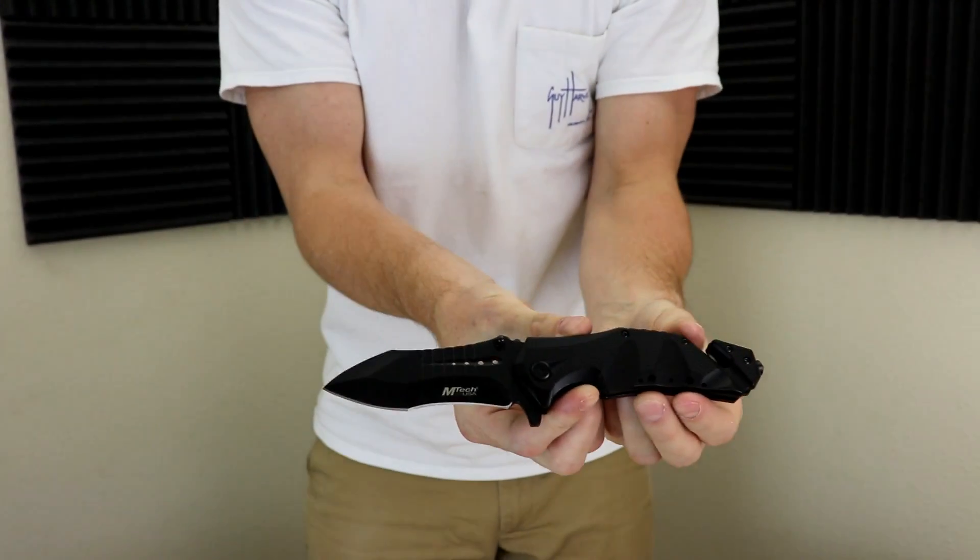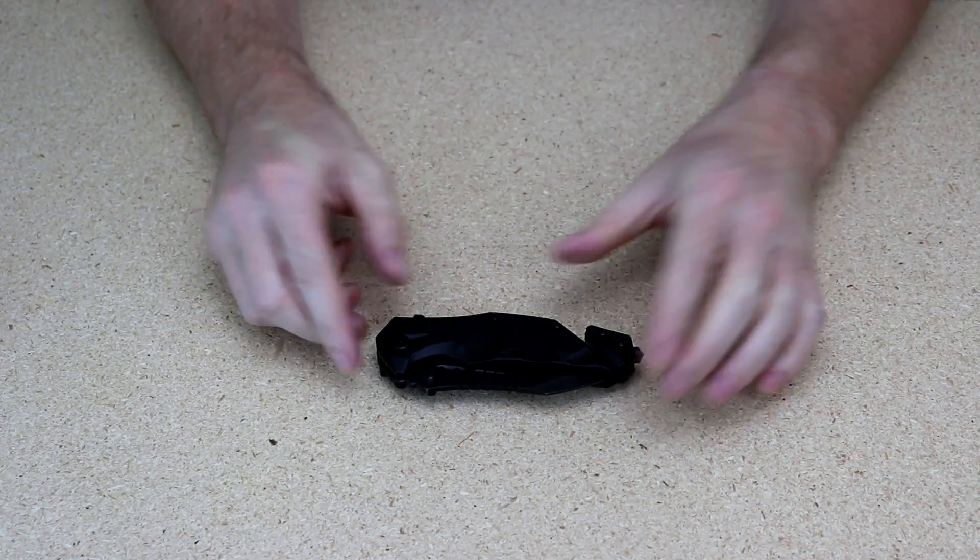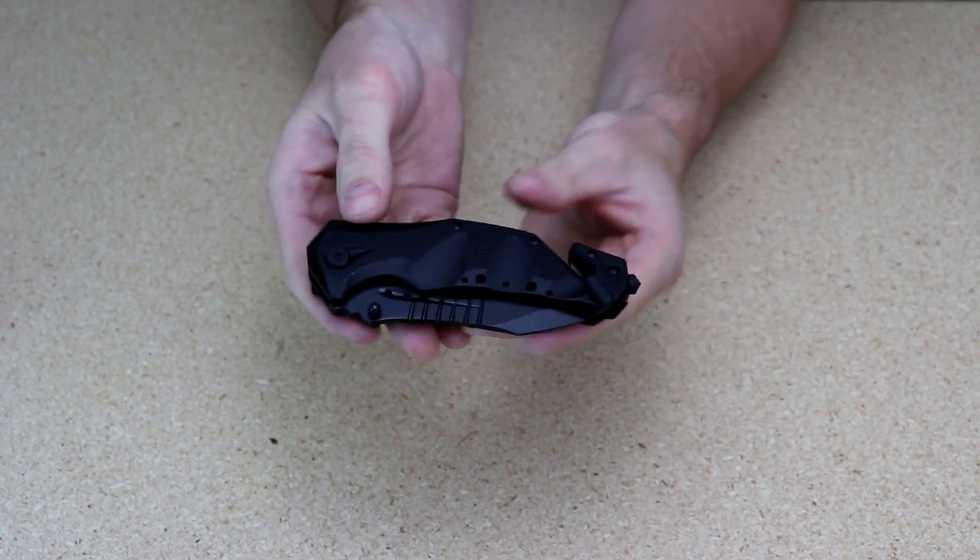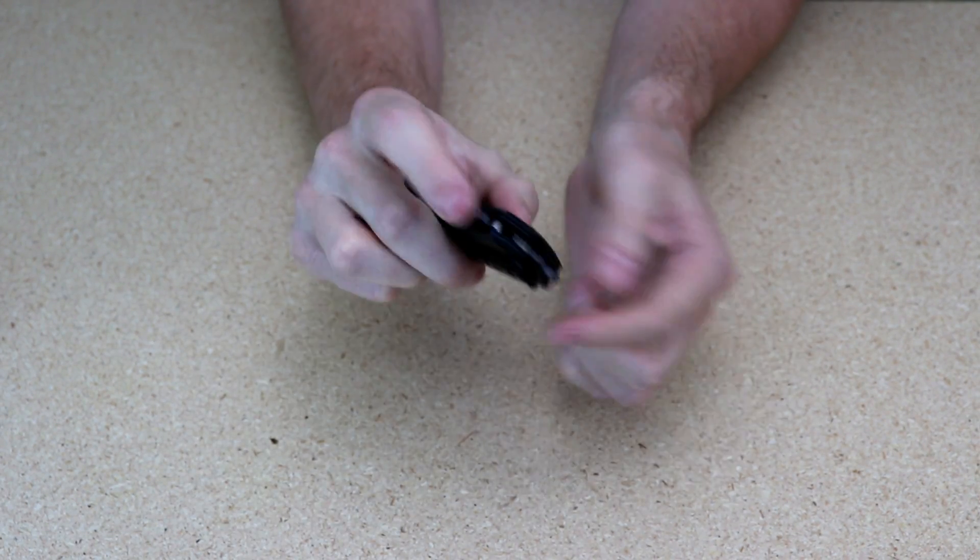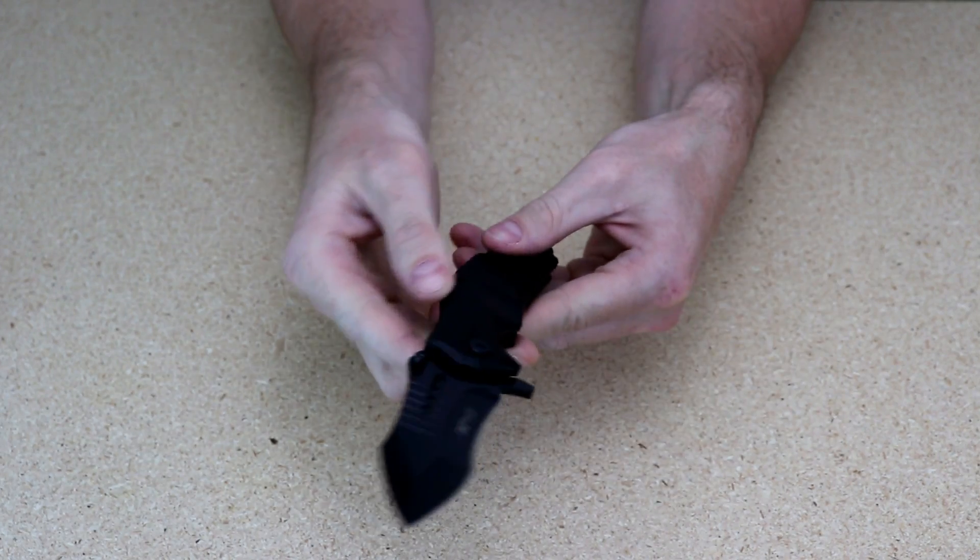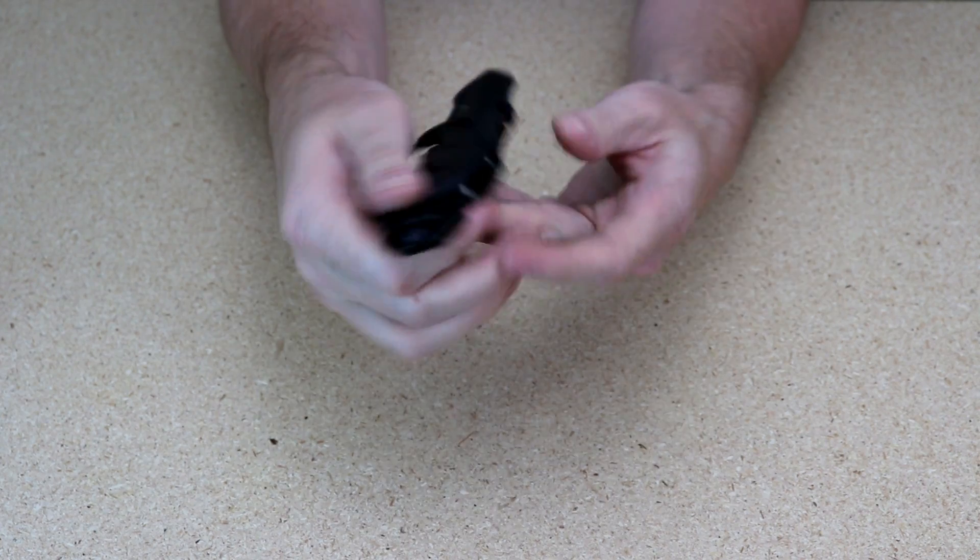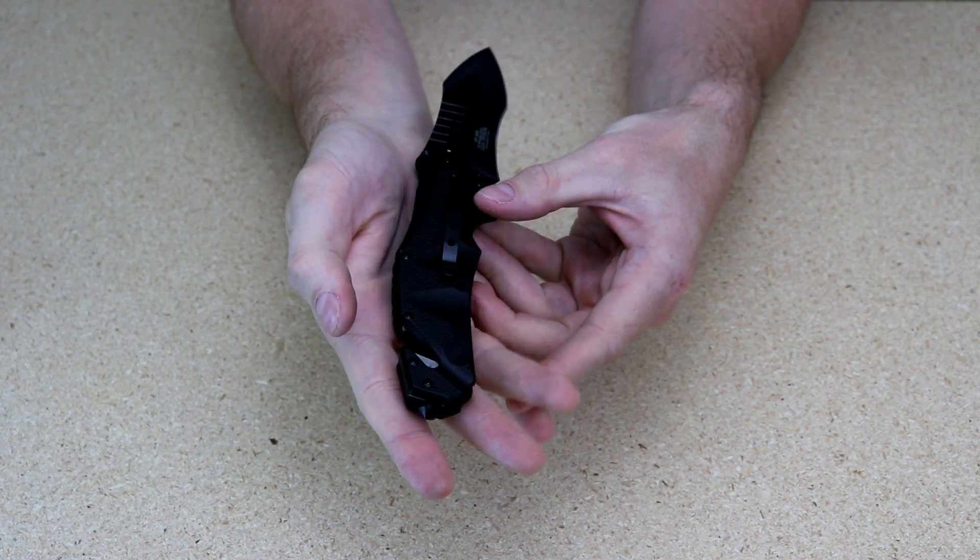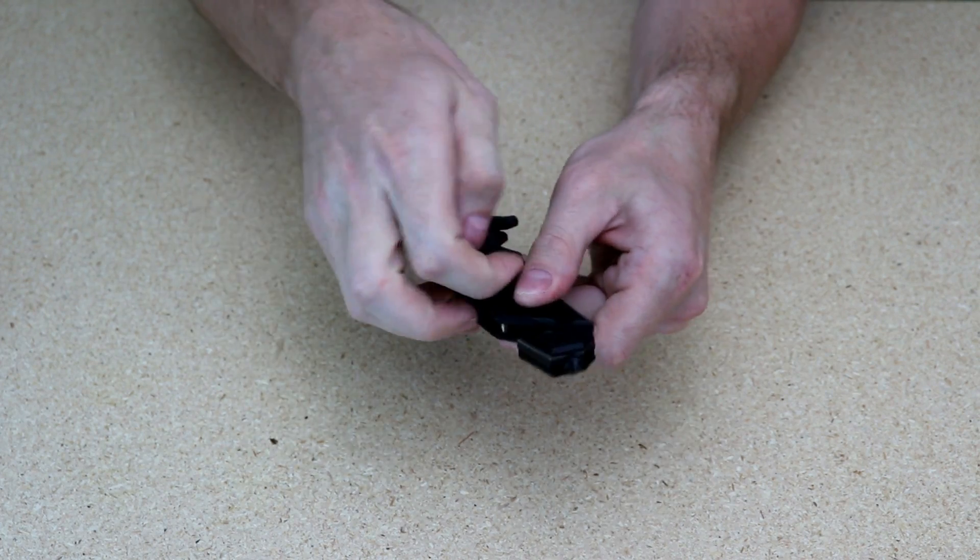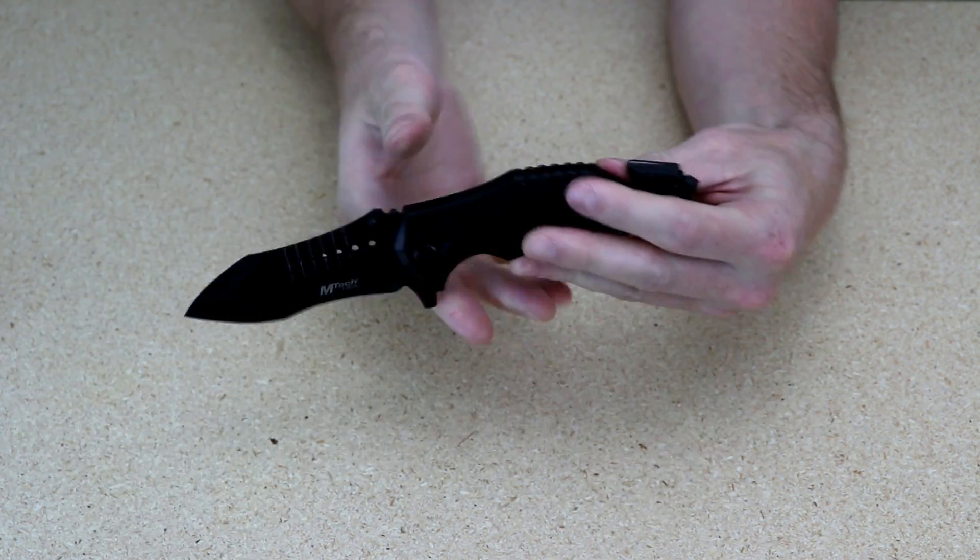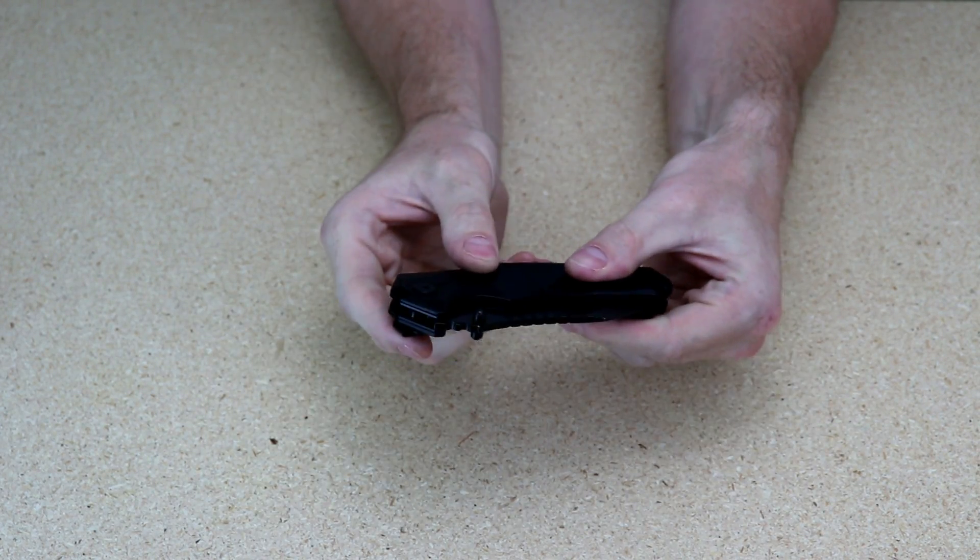Some of the features on this knife: you have your indentions right here, the trigger, it's a nice size trigger. On the back you have your glass breaker and your seatbelt cutter, so this knife would be a good knife to keep in your glove box or your center console. The belt clip seems to be a pretty beefy belt clip. It's got the liner lock right there in the middle, seems to unlock rather easy, can do with one hand.